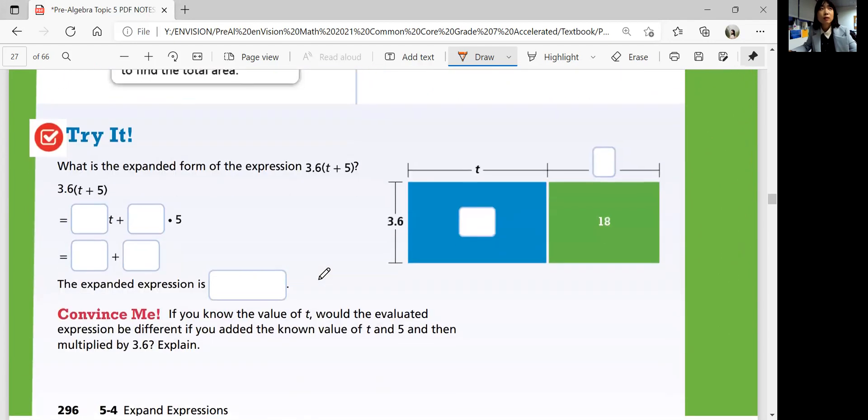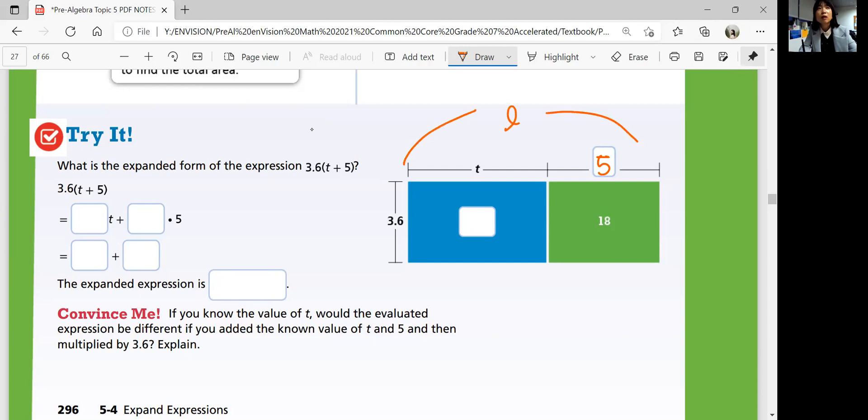All right. Looking at try it question. What is the expanded form of the expression 3.6 times t plus 5? Fill in the blanks. t plus 5 should be the length. And 3.6 should be the width. 3.6 times t is 3.6t. 5 times 3.6 is 18. So you can say equivalent expression for that could be 3.6t plus 18, right? That's the area combined.